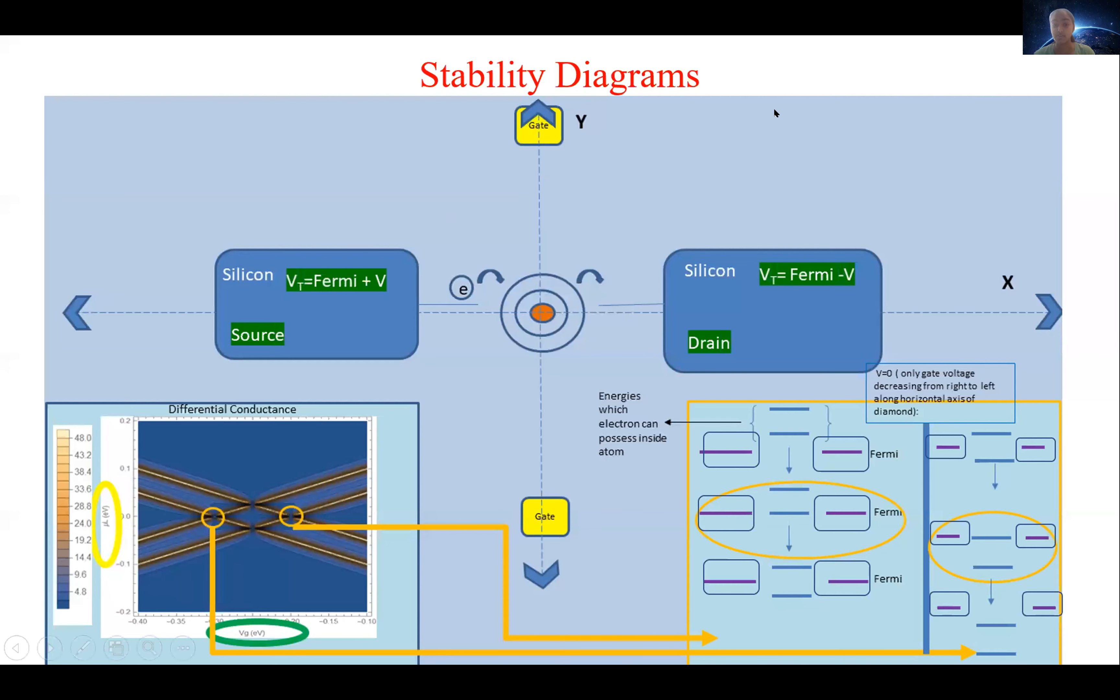So this diagram shows the connection between the experimental setup, source drain gate potentials, the profile that we get from plotting differential conductance as a function of these two potentials, and the atomic energy levels which are open for transport.